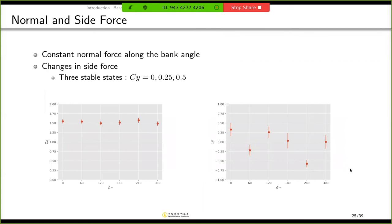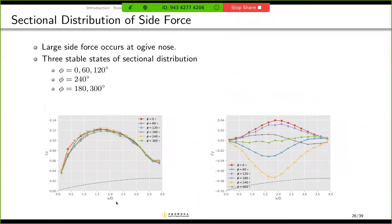And I also compared the sectional distribution of normal and side force. And most force occurs around the nose, the ogive nose. And for normal force, the sectional distribution is almost the same. But for side force, we can clearly see the three stable states, like this red, purple, and blue line. And this black and green one, the total magnitude of the side force is almost zero. And this yellow one has the biggest side force.